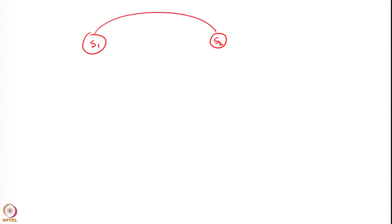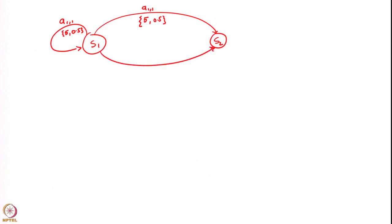The model now would be that you again have state S1 and state S2, with the earlier details remaining the same. When you take action a11 you get a reward of 5 and you transition to state S2 with probability 0.5 and remain in state S1 with probability 0.5. In state S1 you also have action a12, which gives you a reward of 10 with probability 1. When you are in state S2 you can take action a21, which is the only available action, and it gives you reward minus 1 with probability 1.